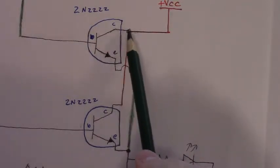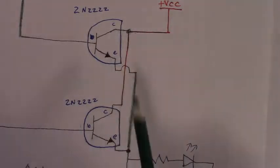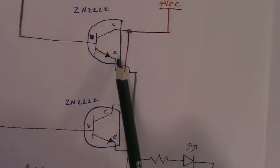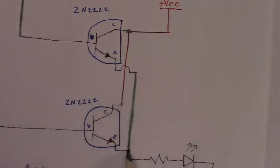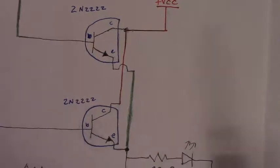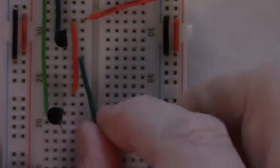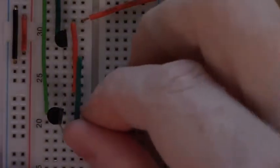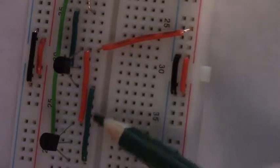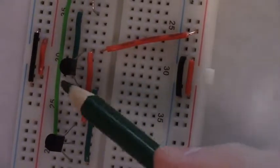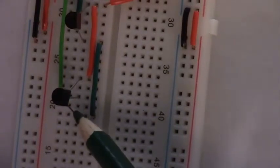Now we need to connect the emitters of the two transistors together. We need a piece of wire in the row with the emitter of the top transistor to run down and connect to the emitter of the second transistor. One end goes in the row with the emitter of the first transistor, and the other end in the row with the emitter of the second transistor.